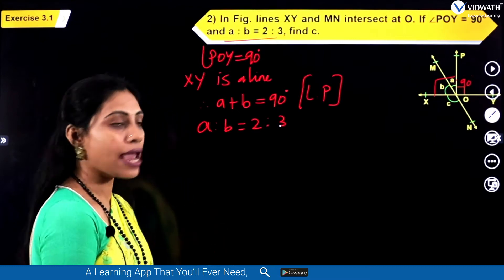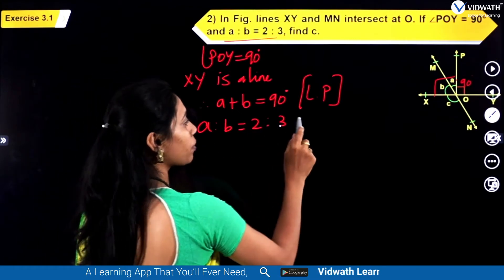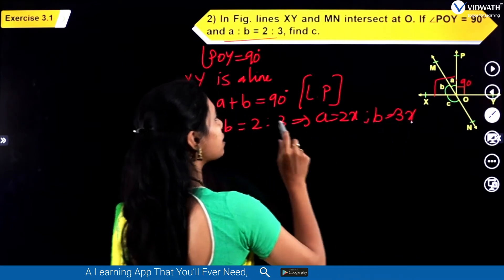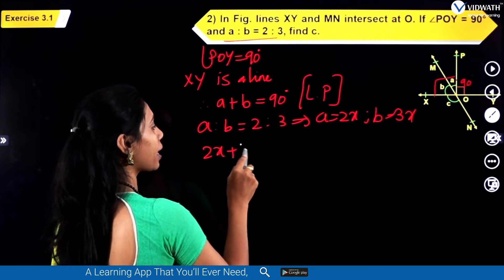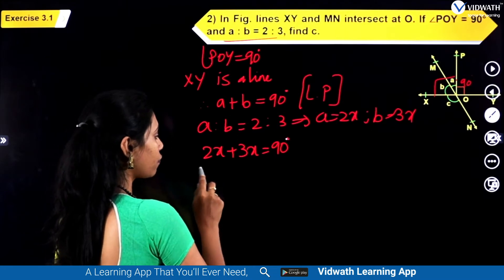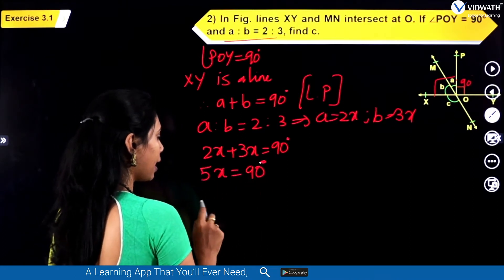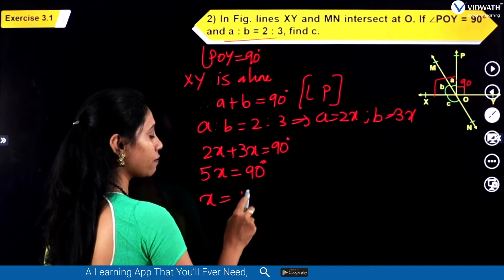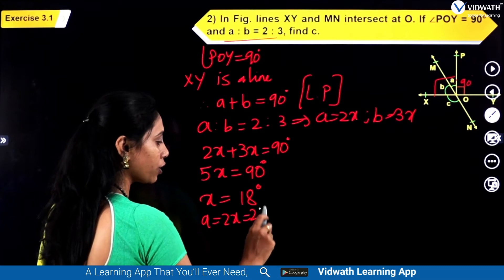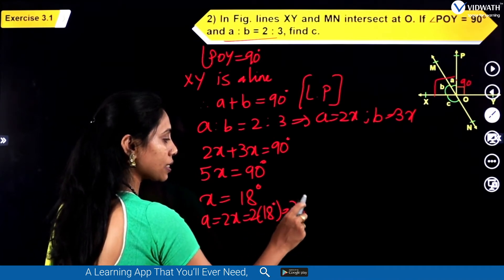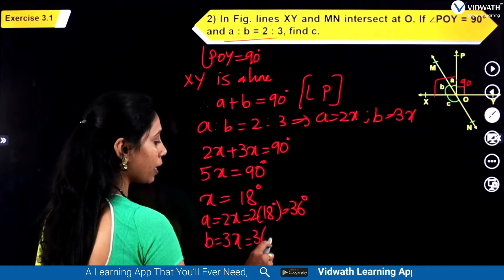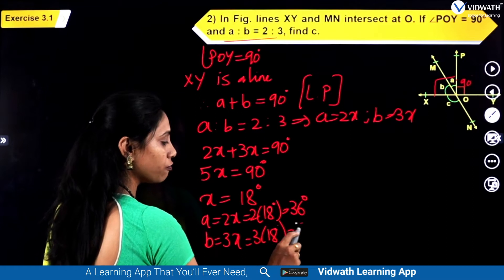Let us take the common ratio as X. So A will be 2X and B will be 3X. Substituting: 2X plus 3X is equal to 90 degrees, so 5X equals 90 degrees, giving X equal to 18 degrees. Therefore, angle A is equal to 2X, which is 2 into 18 degrees, giving 36 degrees. And angle B is 3X, which gives 54 degrees.